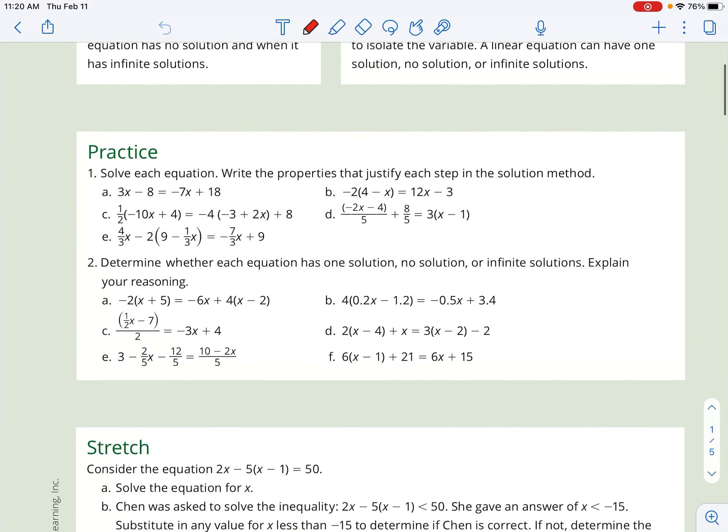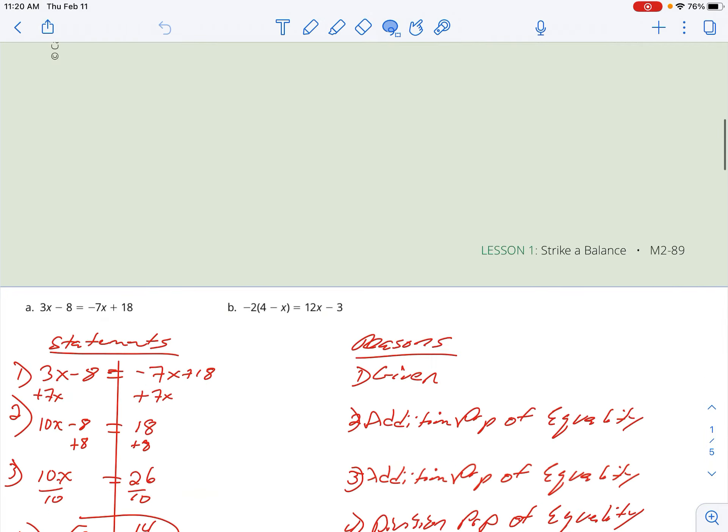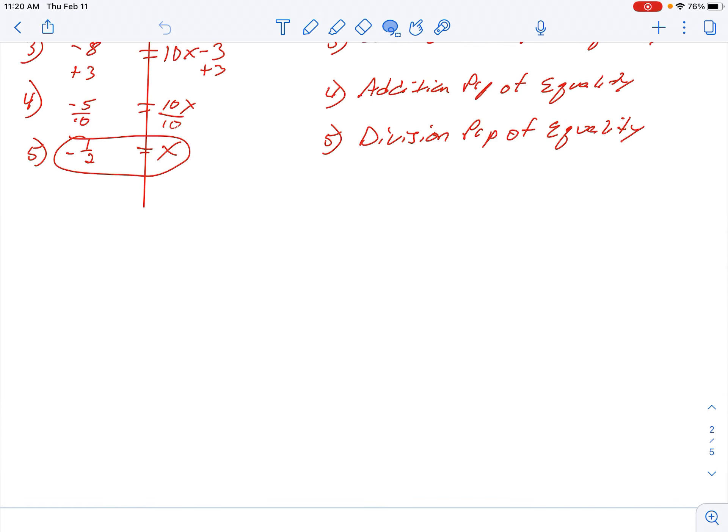Okay, practice 1c. We're going to go through and solve this equation, and we're also going to justify it. So let's take a look and go down a little bit where I've got some room. I'll solve it right here. So since we are going to justify, we've got my statement column, and we've got our reasons column. First reason is given. I've got to give you an equation to start off with.